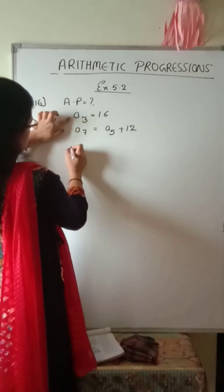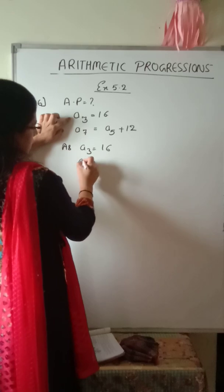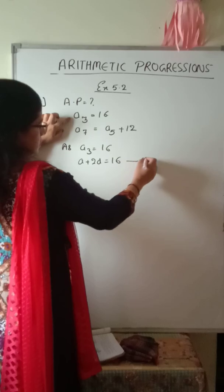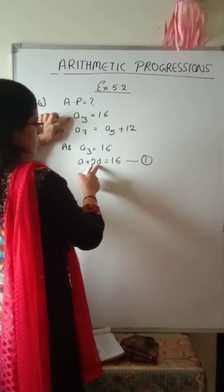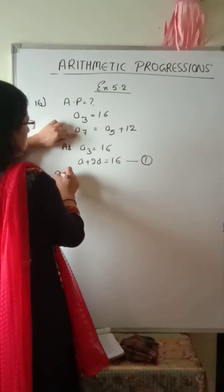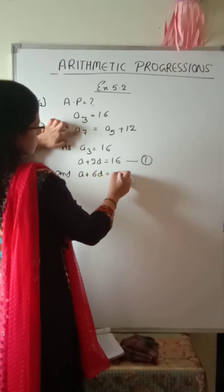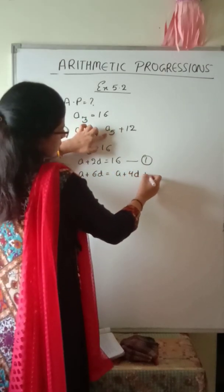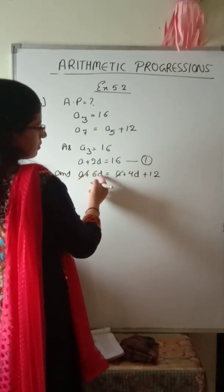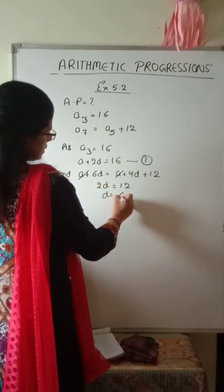We write the first condition: the third term is 16, so A plus 2D equals 16. This is equation number 1. We have two unknowns so we cannot solve it alone. For the second equation, the seventh term equals the fifth term plus 12: A plus 6D equals A plus 4D plus 12, which gives 6D minus 4D equals 12, so 2D equals 12, therefore D equals 6.